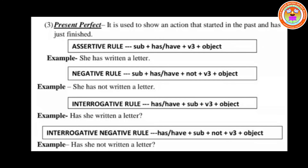For the negative rule: Subject + has/have + not + V3 + object. Example: 'She has not written a letter.' For the interrogative rule: Has/Have + Subject + V3 + object — inversion type. Example: 'Has she written a letter?' For the interrogative negative: Has/Have + Subject + not + V3 + object. Example: 'Has she not written a letter?' These are the four forms to remember for any tense.